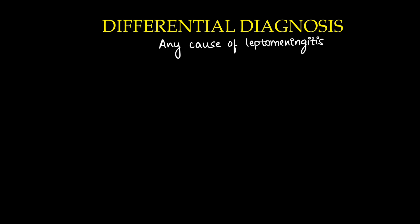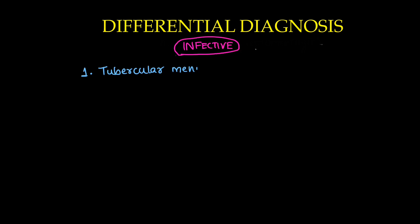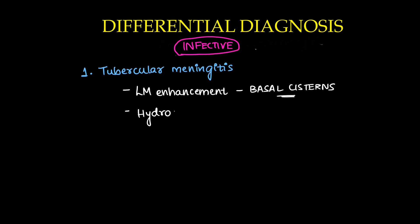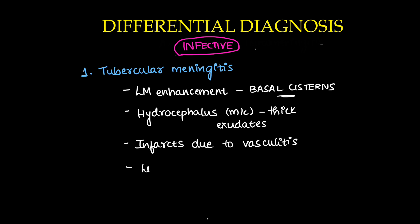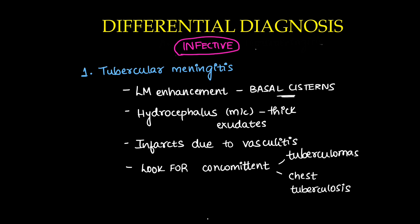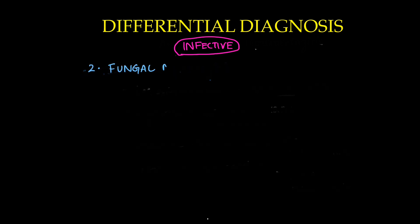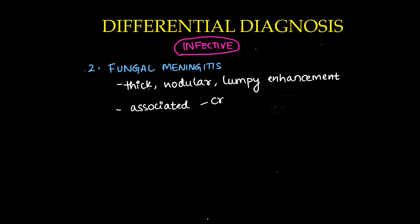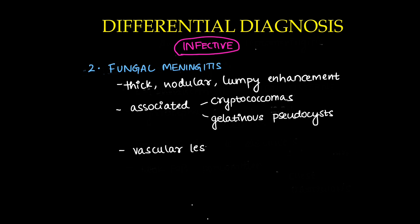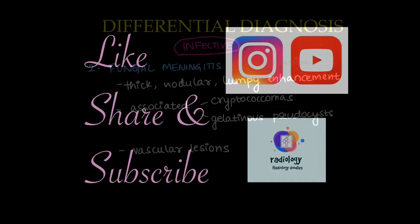Any cause of leptomeningeal enhancement can be a differential diagnosis for pyogenic meningitis. The major infective differential is tubercular meningitis, which shows leptomeningeal enhancement predominantly in the basal cisterns. Hydrocephalus is more common in tubercular meningitis due to thick exudates causing obstruction. Infarcts due to vasculitis may occur, and concomitant tuberculomas in the brain and chest tuberculosis should be sought. Fungal meningitis shows thick nodular leptomeningeal enhancement — whereas in pyogenic it is smooth and thin — and may be associated with cryptococcomas or gelatinous pseudocysts, with vascular complications also possible.